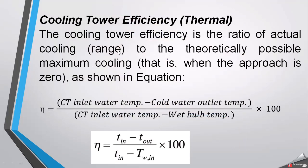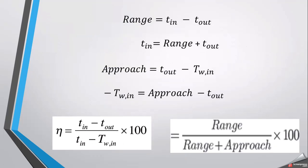Cooling tower efficiency is the ratio of actual cooling (range) to the theoretically possible maximum cooling, which occurs when approach equals zero — meaning no difference between cold water and ambient wet bulb temperature. The formula is: η = (T_in − T_out) / (T_in − T_wetbulb) × 100. Since range = T_in − T_out and approach = T_out − T_wetbulb, this simplifies to: η = range / (range + approach) × 100.